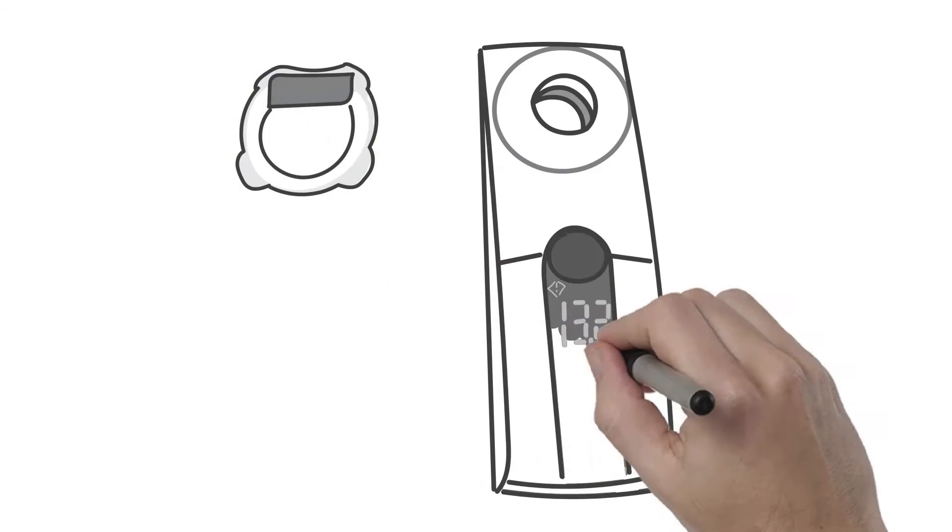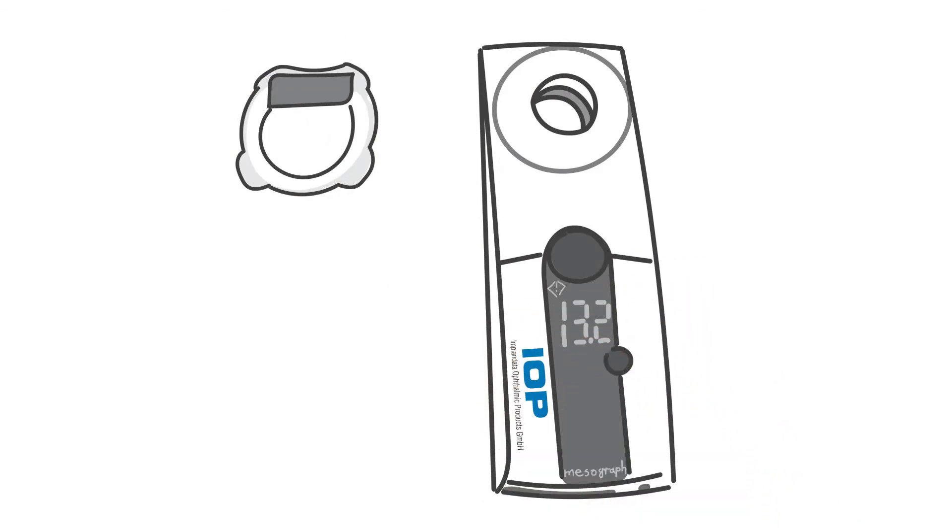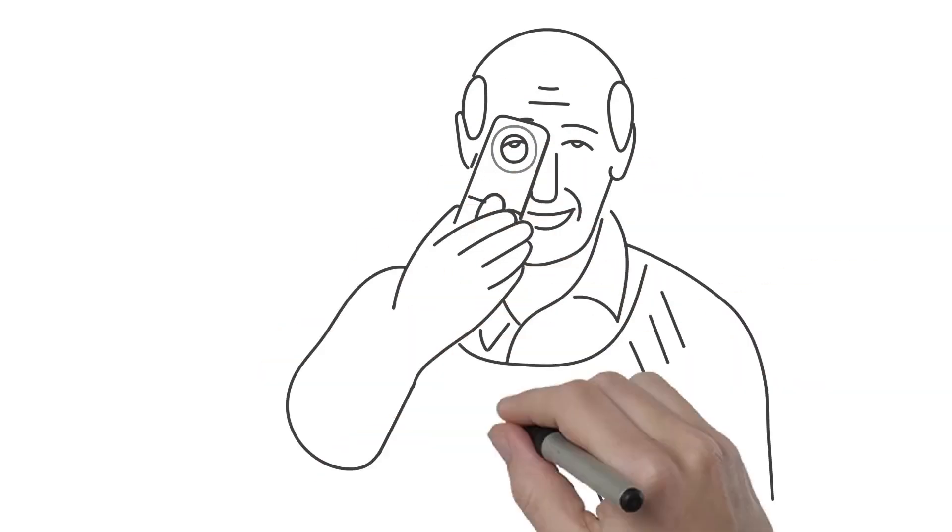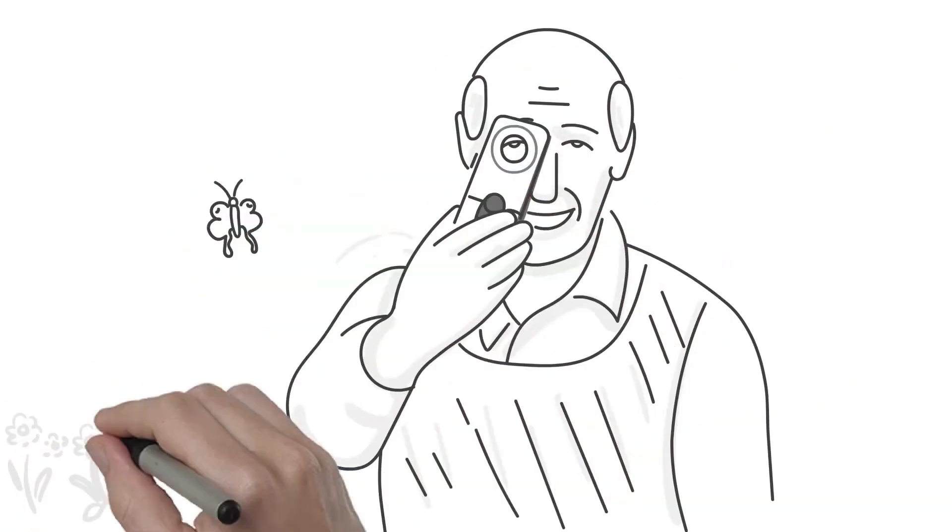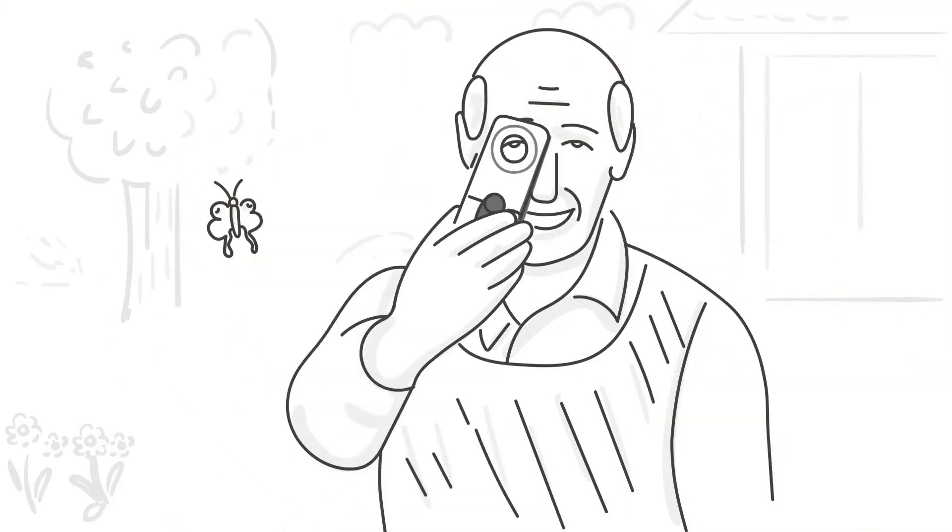Now, thanks to Implandata Ophthalmic Products, there's a solution: the iMate. A fully integrated system for close monitoring of IOP, the iMate is a personal pressure reading tool which allows patients to check their own eye IOP anytime.